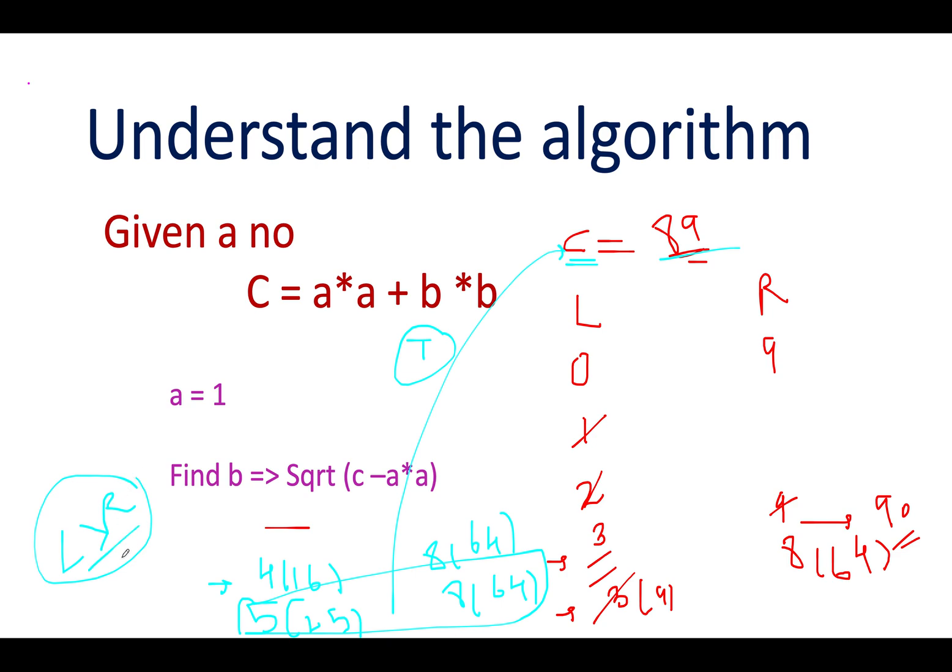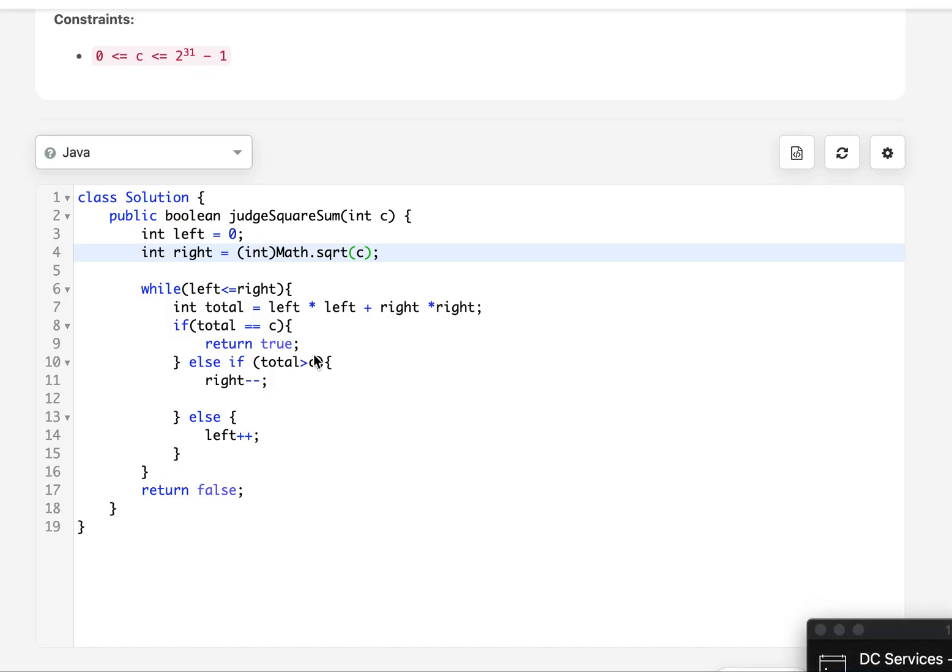As soon as we see that this condition is breached, I hope you understood the logic. Without much ado, let's look at the coding section. I have taken two variables here: one is left, the other is right. Left is equal to zero, right is equal to square root of c, and I have typecasted it into integer format.